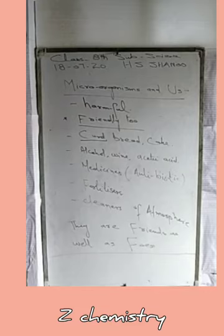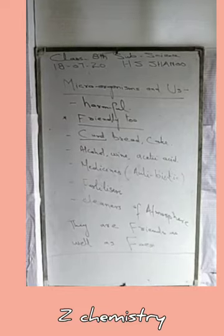For example, curd is made because of bacteria. If this bacteria were not present, then curd would not be available.